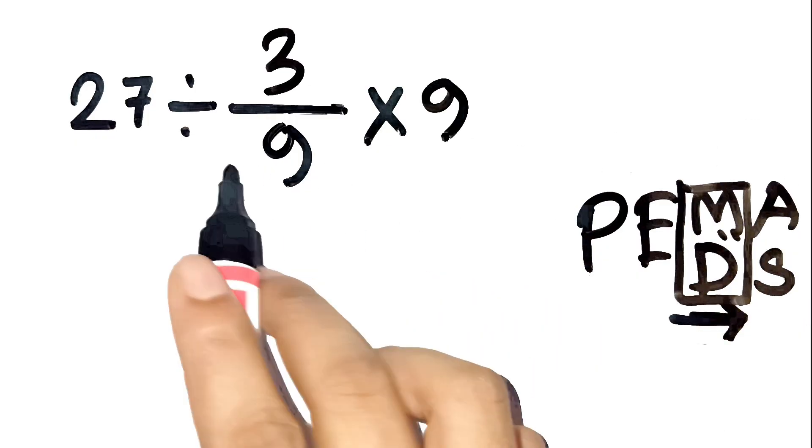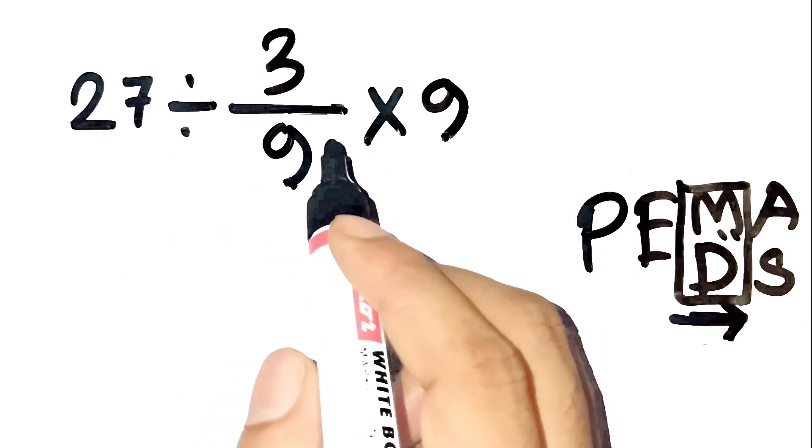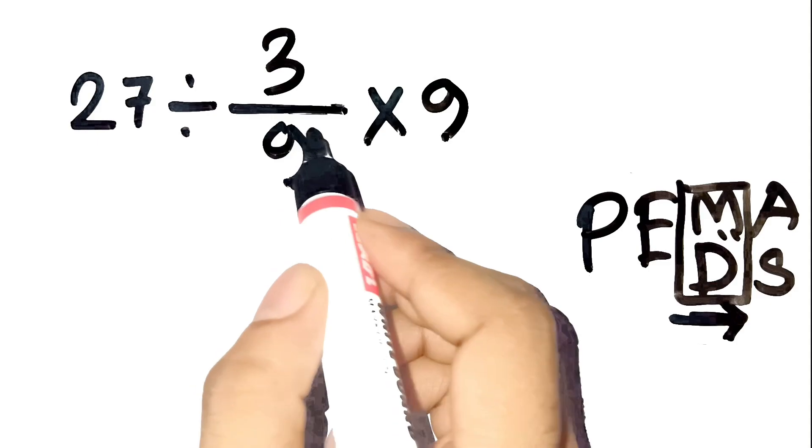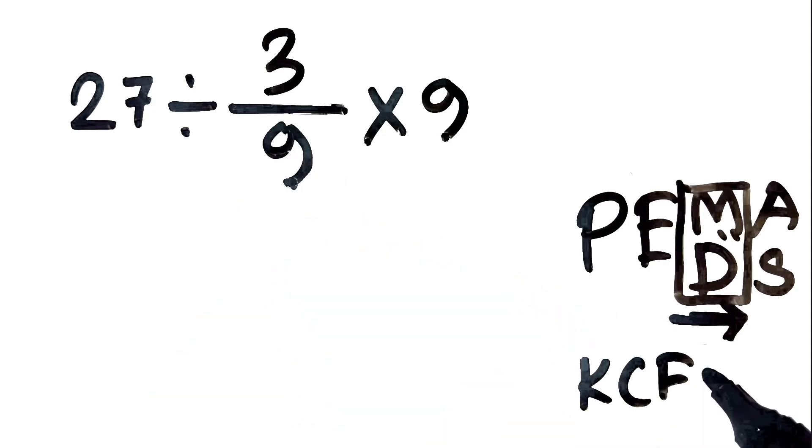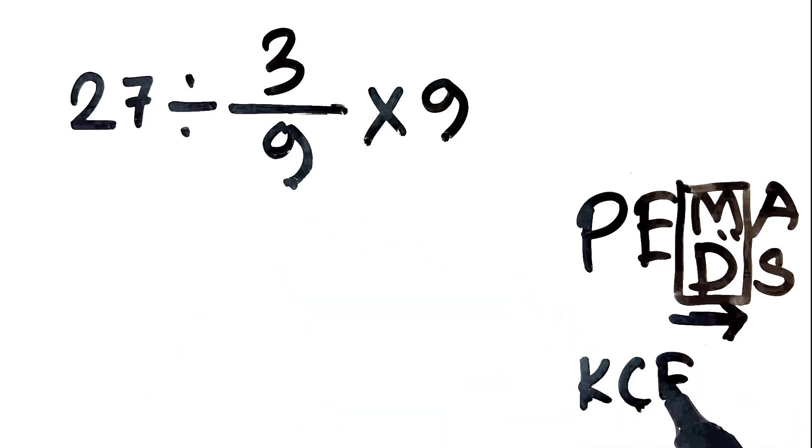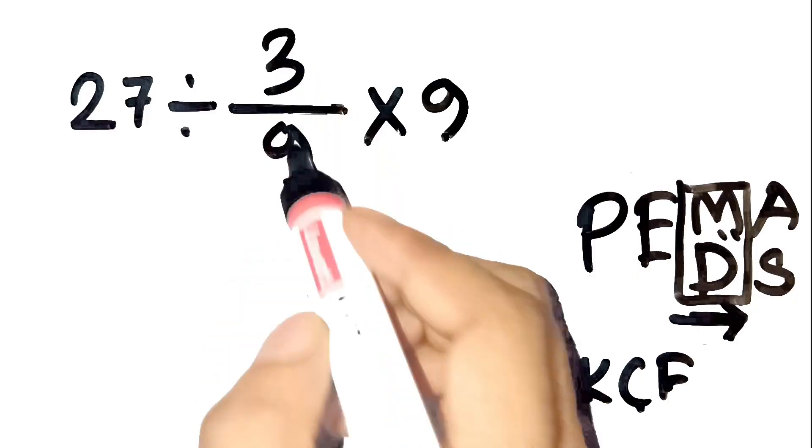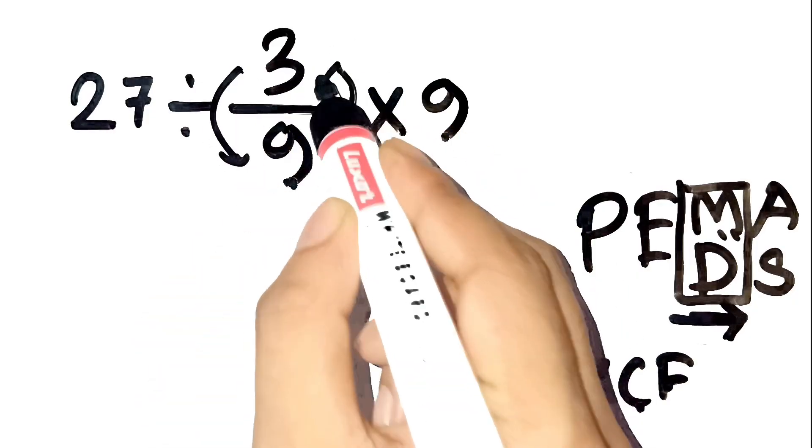Also, notice we have a fraction here, 3 over 9. Whenever you divide by a fraction, you use the KCF rule. That's keep, change, flip. That means divide 3 over 9 becomes times 9 over 3. Got it?